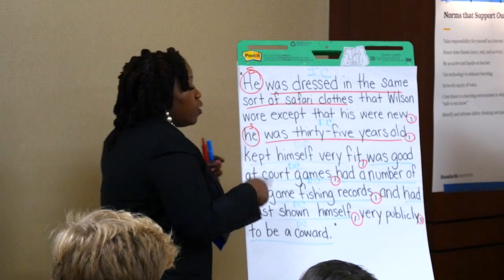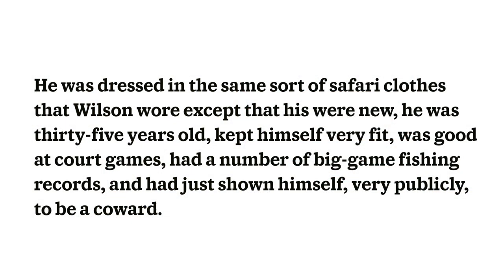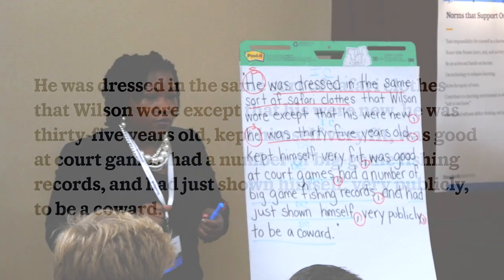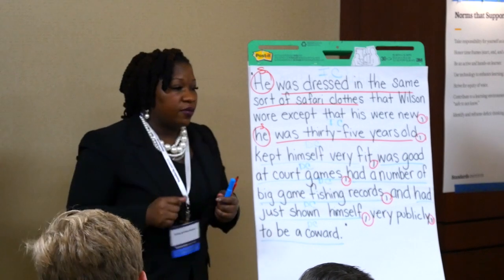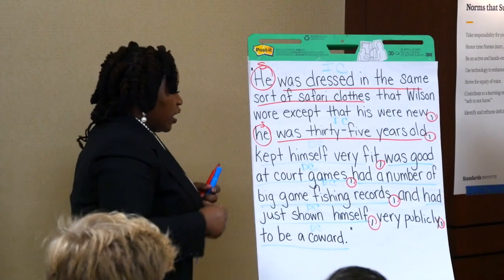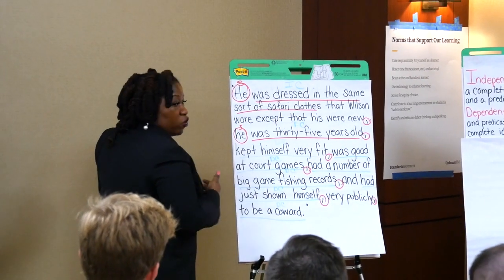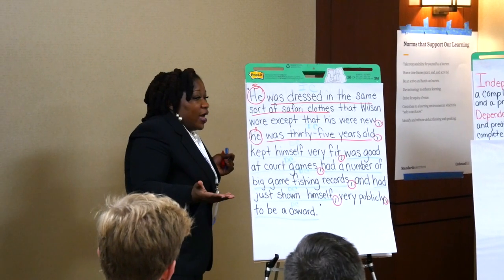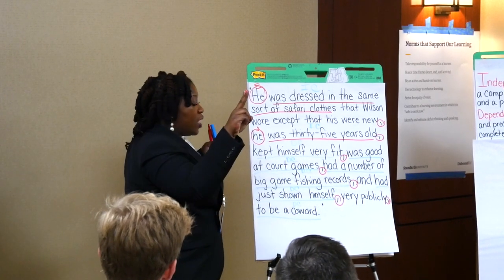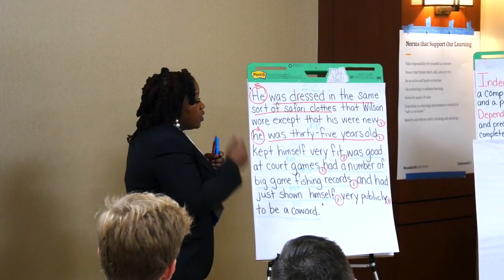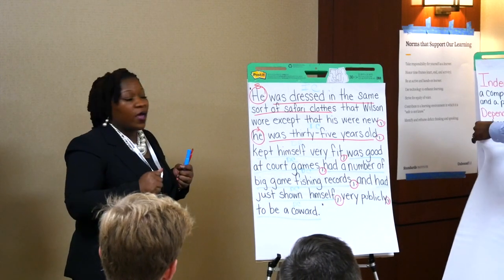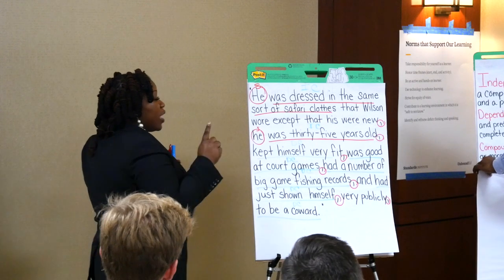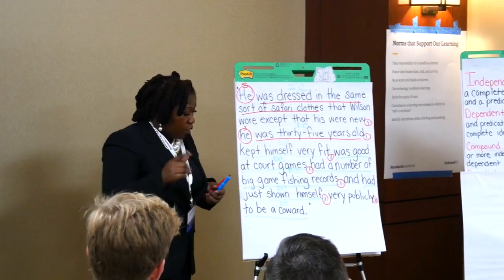Before we even go to structure, how do you know that these are dependent clauses? But what makes these clauses dependent? Not a complete idea. Very good. Each one is just describing the actual subject, but it doesn't express a complete idea. So now, now that we know we have two independent clauses and two dependent clauses, what type of sentence is this? Complex compound sentence. Very good. And a complex compound sentence has two or more independent clauses and one or more dependent clauses.